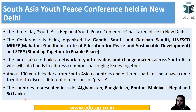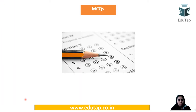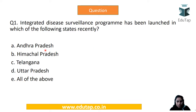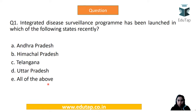Now moving to the MCQ section. Question 1: The Integrated Disease Surveillance Program has been launched in which of the following states recently — Andhra Pradesh, Himachal Pradesh, Telangana, Uttar Pradesh, or all of the above? The correct answer is all of the above, as all these states are covered under IDSP.